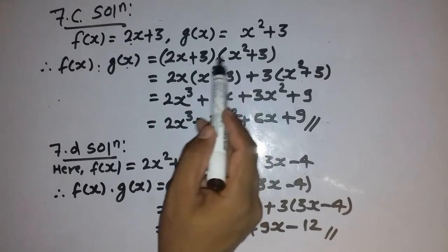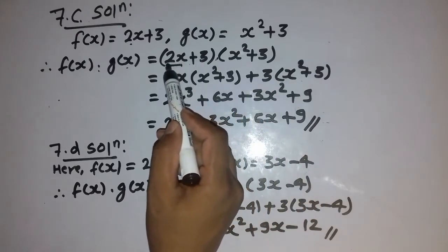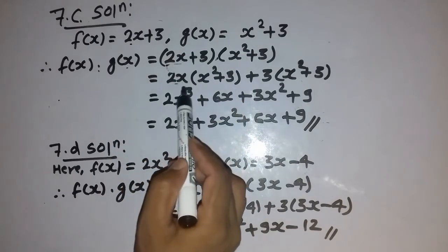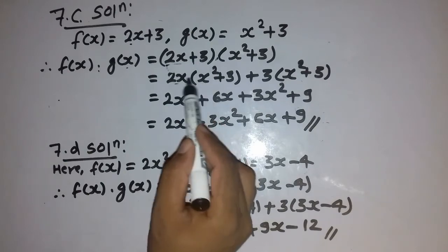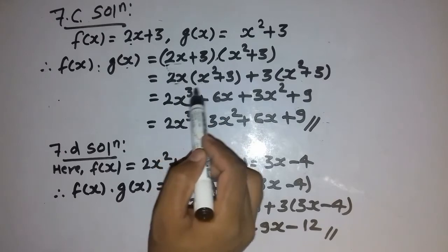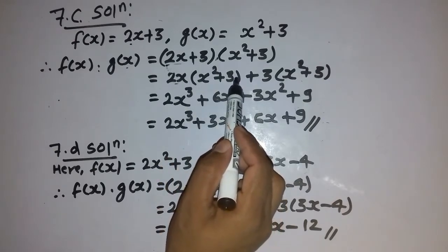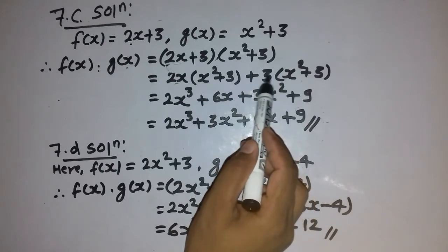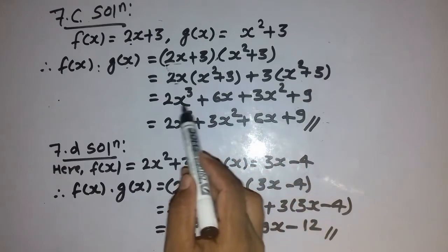As before, we multiply with the first term then again with the second term. At first we multiply 2x by x squared plus 3, then plus 3 by x squared plus 3. So 2 times 1 is 2, and x times x squared gives x to the power 3, since power 1 plus 2 is 3. Then plus 2 times 3 is 6, and x is written as it is. Then plus 3 times 1 is 3, x squared as it is, then plus 3 times 3 is 9.